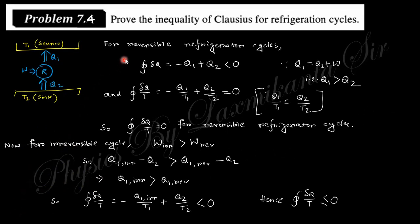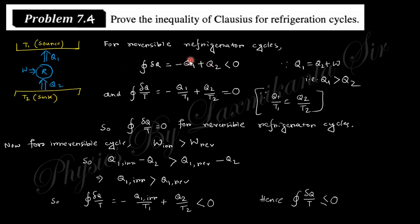Problem 4: prove the Clausius inequality for a refrigeration cycle. A refrigerator takes heat Q₂ from the sink, work W is done on it, and it ejects heat Q₁ to the source: Q₁ = Q₂ + W, so Q₁ > Q₂. The net heat change of the refrigerator is −Q₁ + Q₂, which is negative since Q₁ > Q₂. Dividing by temperature and integrating gives the cyclic integral ∮dQ/T.